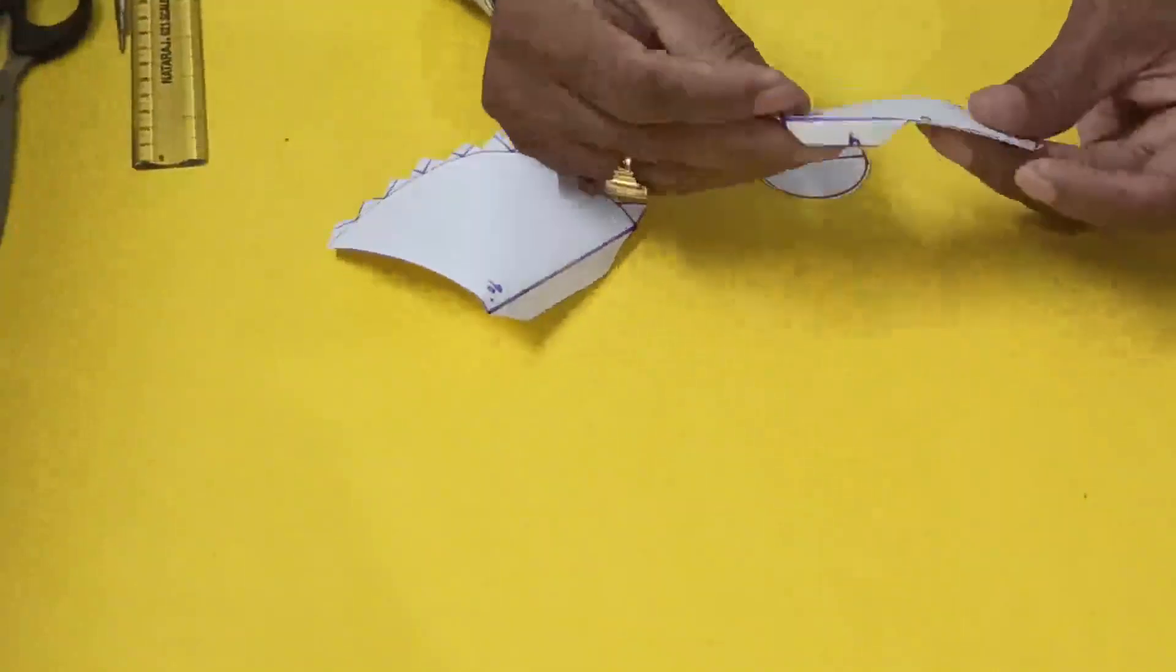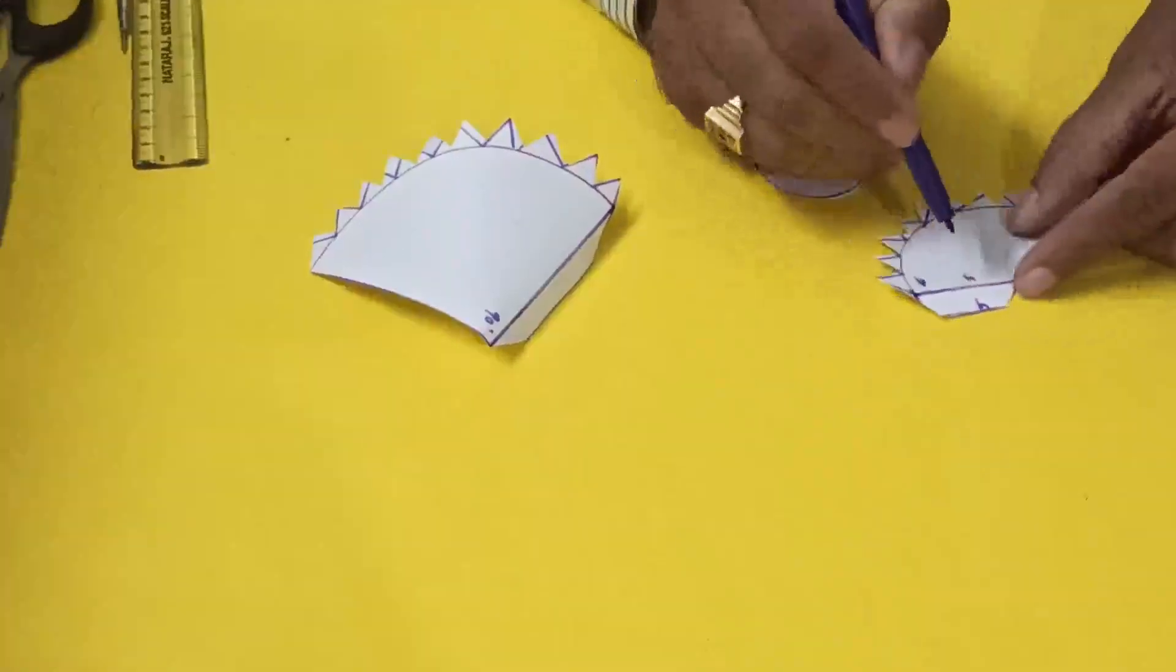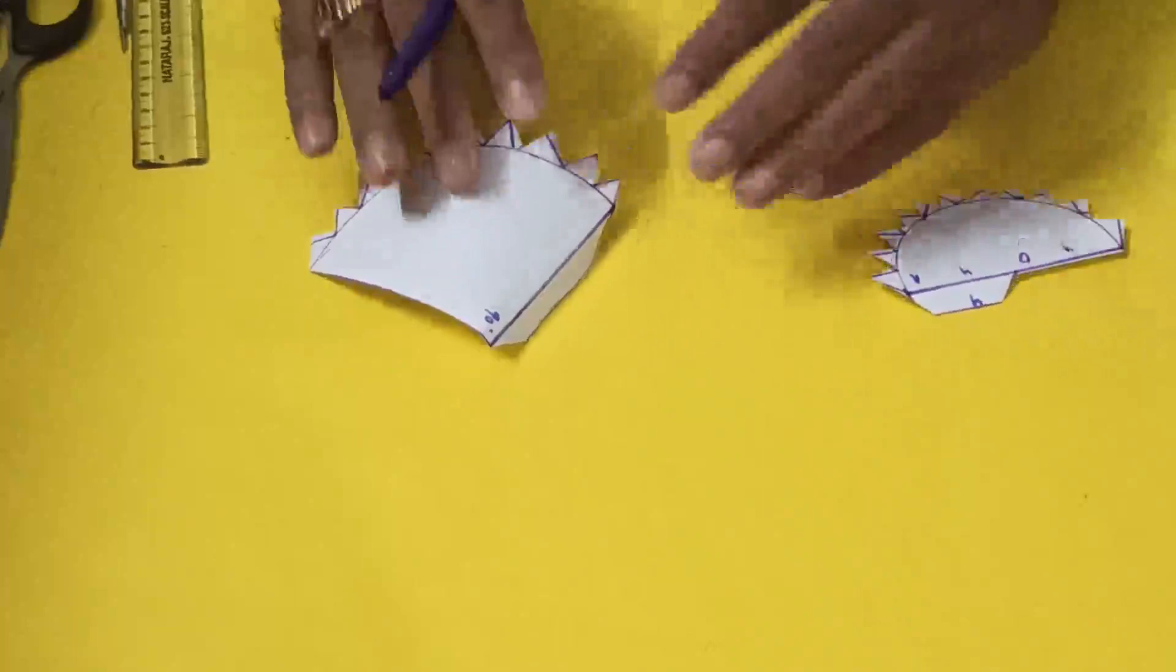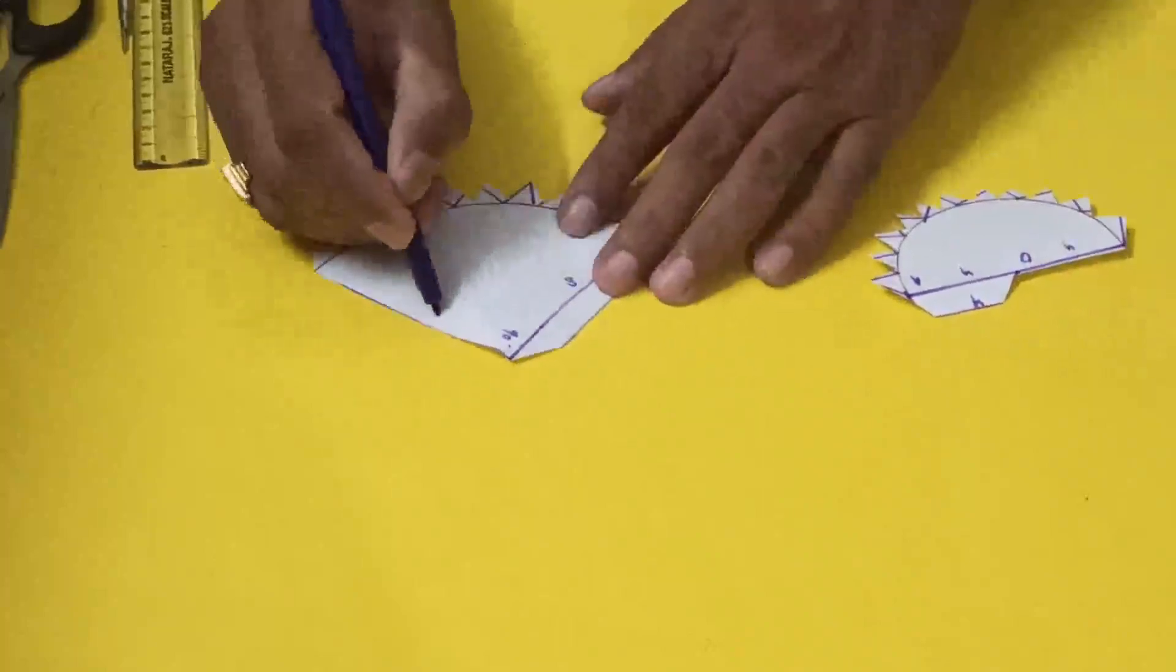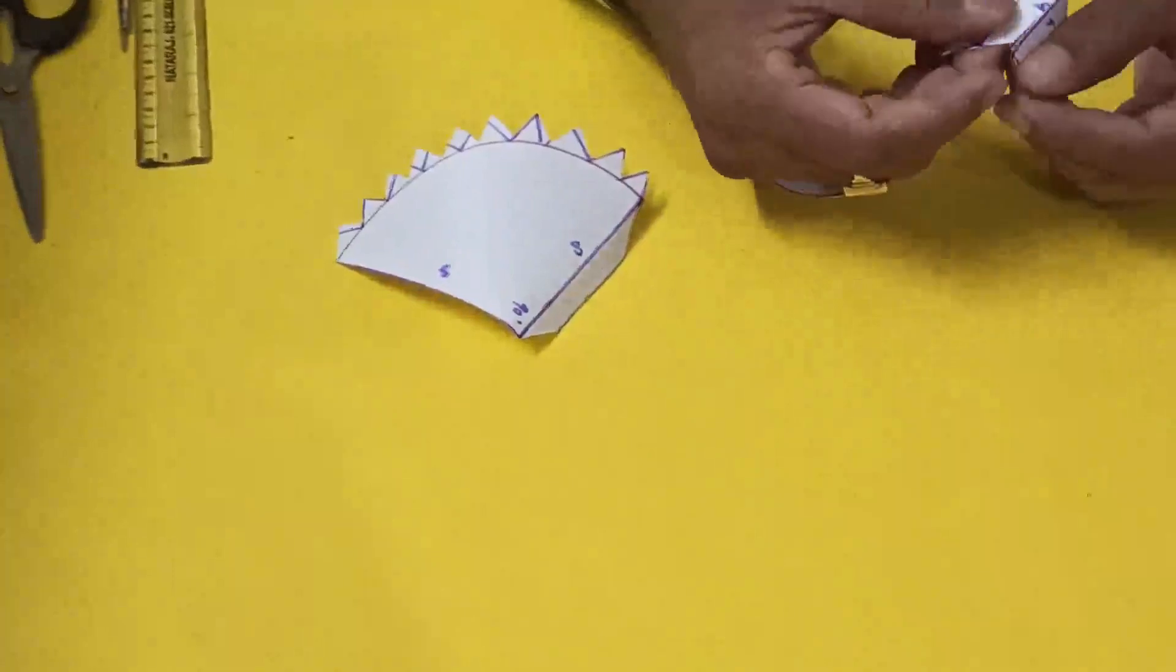So this is the slant surface - 4 centimeters this one and this one 8 centimeters. You will connect like this.